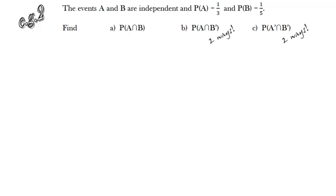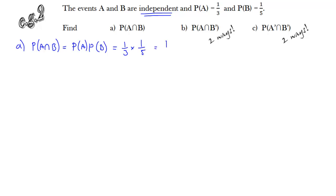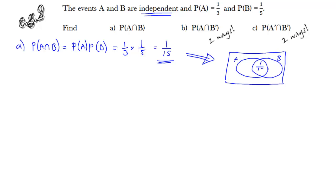Here's an example where we've got two independent events A and B, and we know their two probabilities. For Part A, the probability of the intersection is a straightforward application of the multiplication rule — probability of A times the probability of B, since they're independent. Multiplying those probabilities together gives 1/15 for the intersection. We draw a Venn diagram and put 1/15 for the intersection. The other regions are found by subtraction: subtract 1/15 from 1/3 to get 4/15; subtract 1/15 from 1/5 to get 2/15; and subtract all of that from 1 to get 8/15. Now we have a complete Venn diagram.